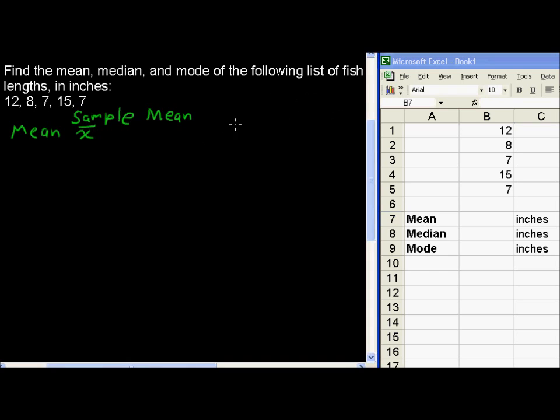If you see mu, pronounced mu, but to us it looks like a u with a line on it. It's a Greek letter mu. That's the population mean.